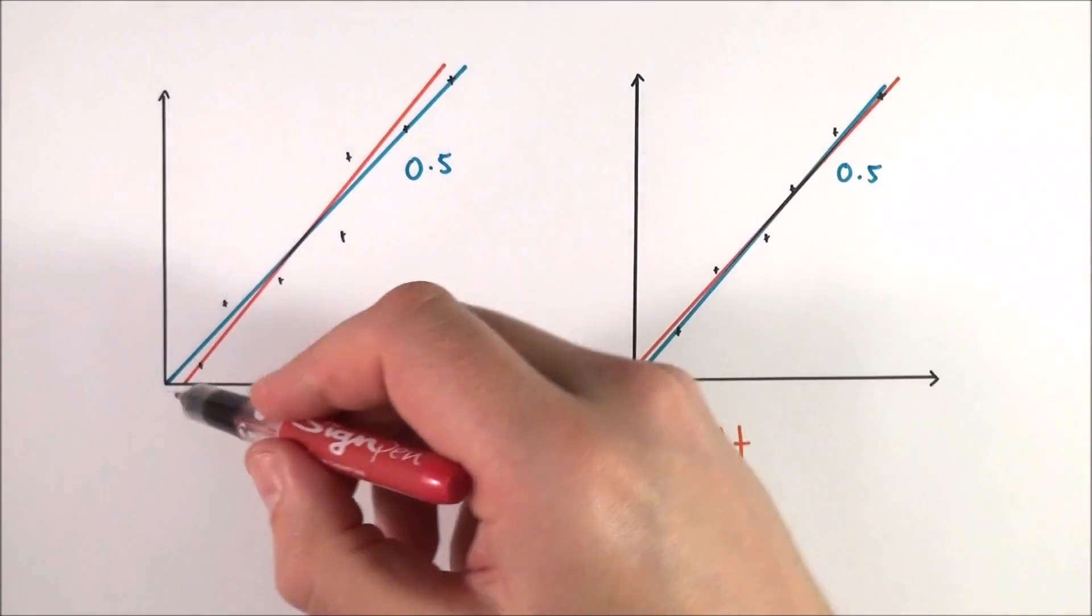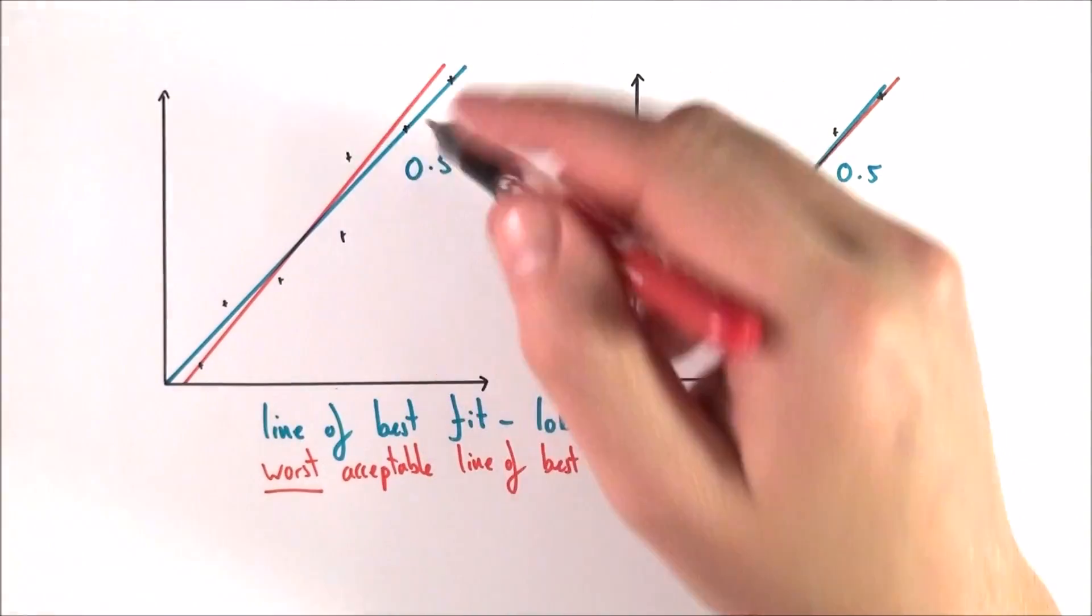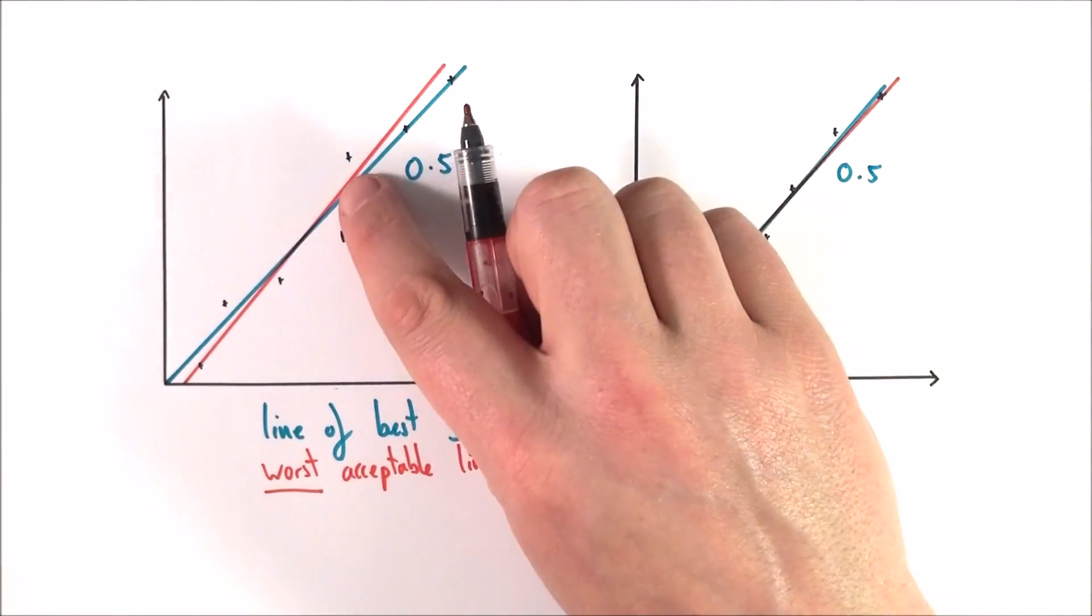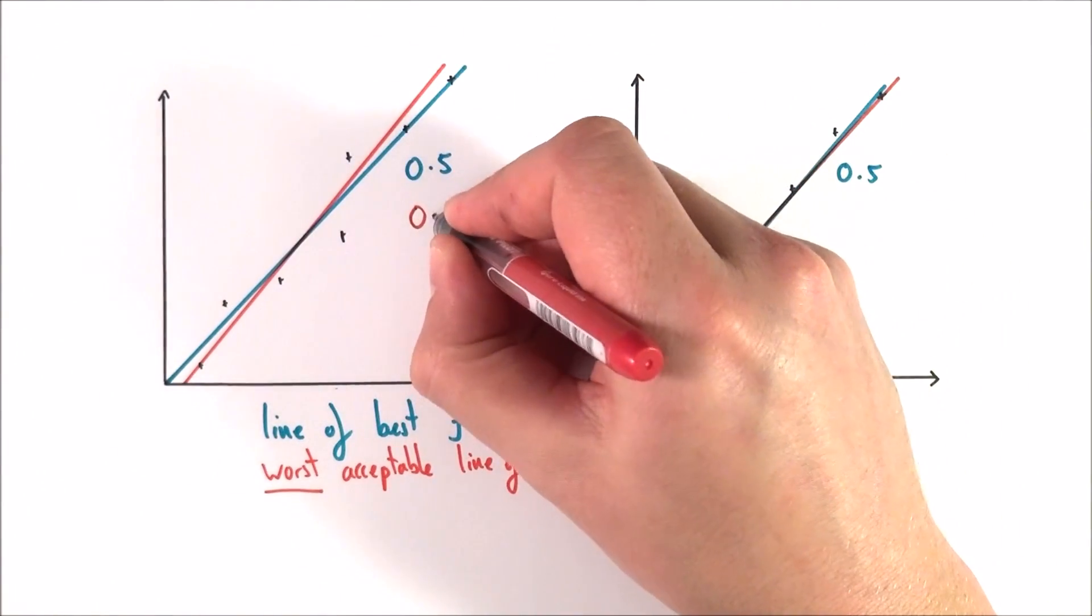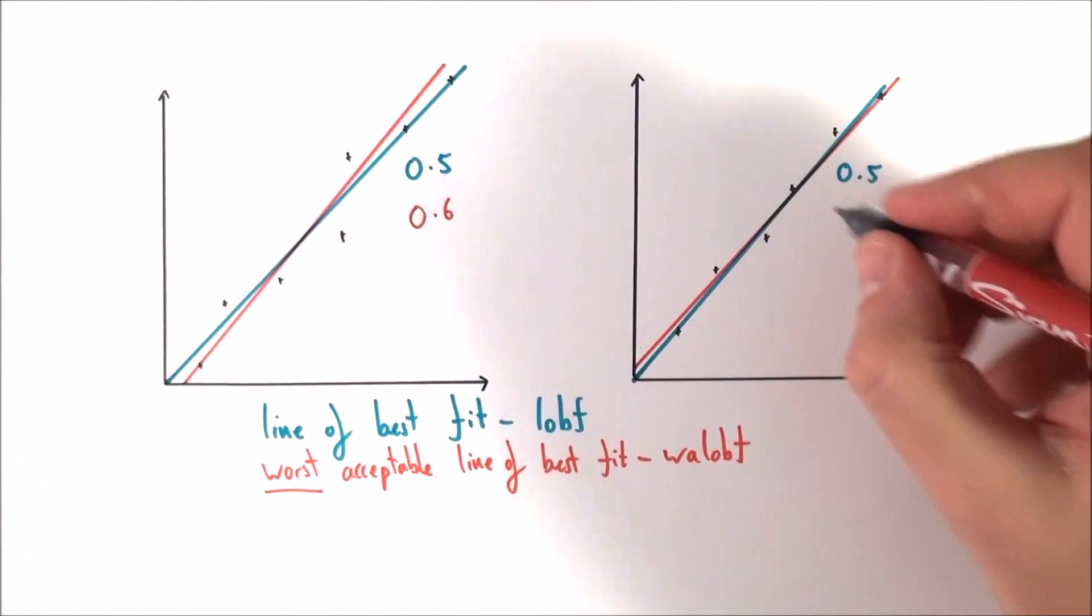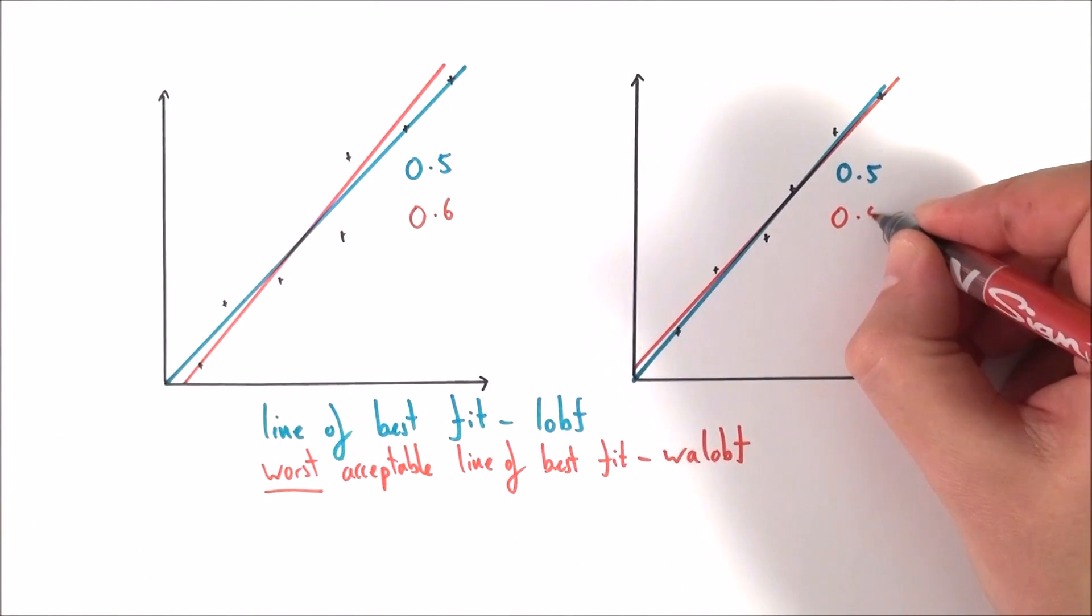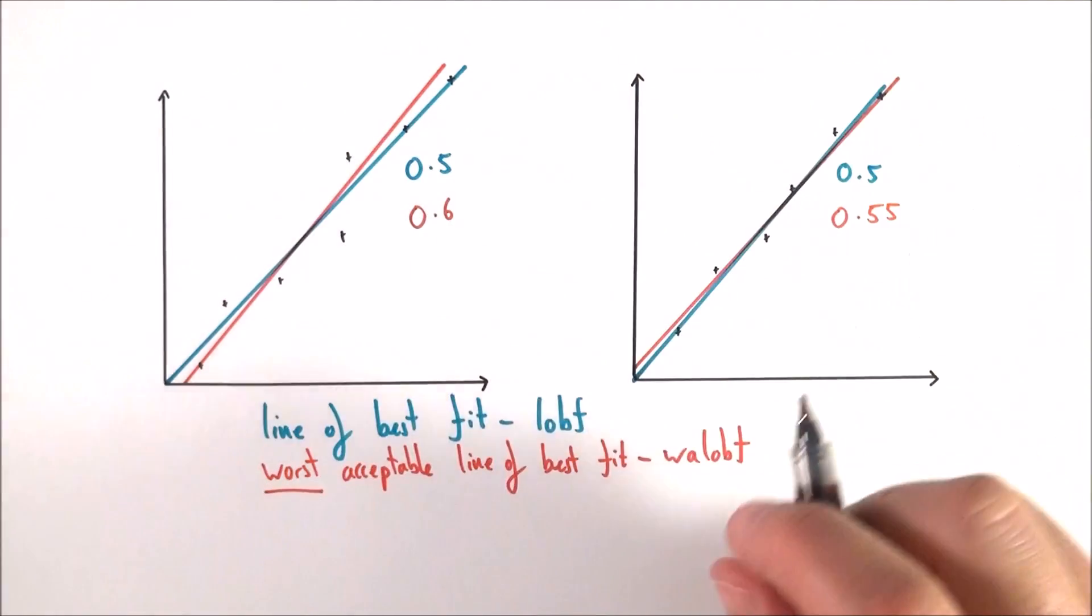What we can then do is we can work out the gradient, doing it properly, drawing a big triangle, working out correctly. Maybe we find that the value of the worst acceptable line of best fit is a value of 0.6 for this one, whereas over here it's got a value of 0.55.